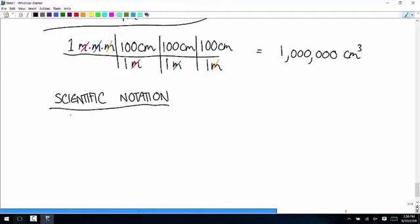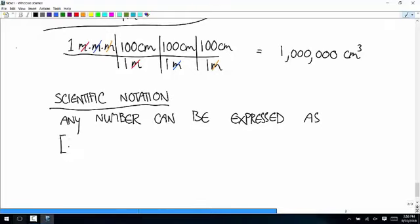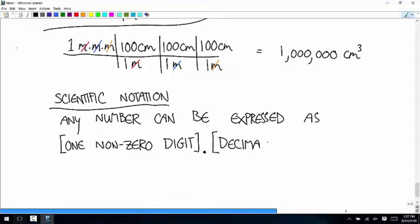The idea of scientific notation is that any number can be expressed as one non-zero digit, followed by a decimal point, followed by decimal, times 10 to some integer.